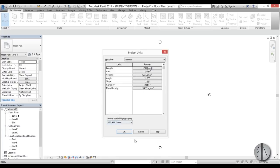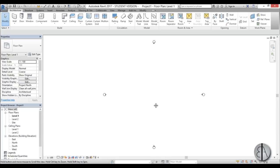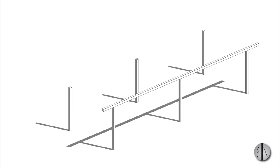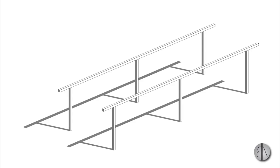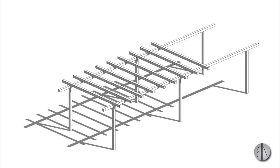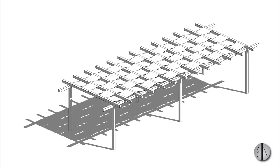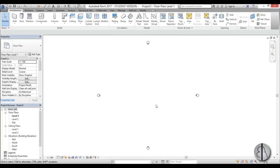First you need to ask yourself what you need to model something like this. We're going to need some columns, some beams running lengthwise, then a beam system running horizontally, and we need a woven cloth that we can model as a component family. Let's get started.